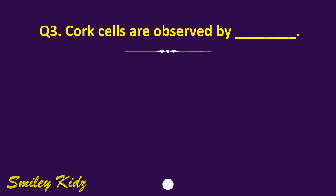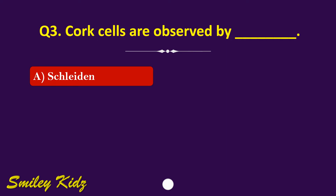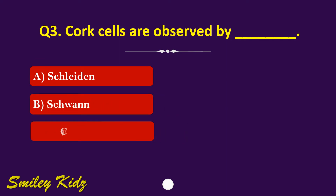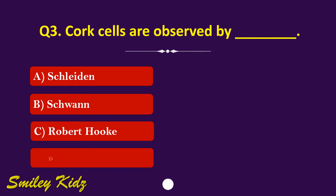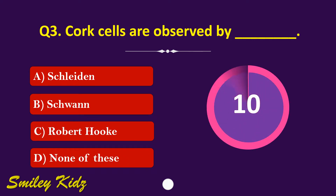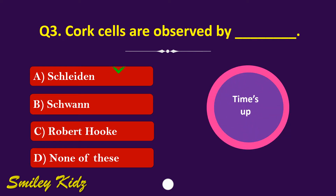Question number 3. Cork cells are observed by dash. The options are: A. Schleiden, B. Schwann, C. Robert Hooke, or D. None of these. Your time starts now. Your time is up and the right answer is option C. Robert Hooke. Cork cells are observed by Robert Hooke.